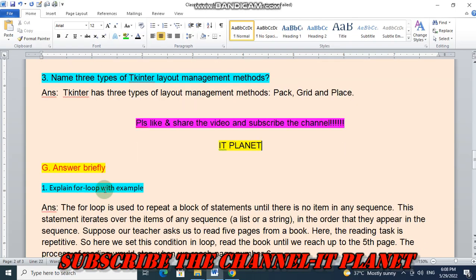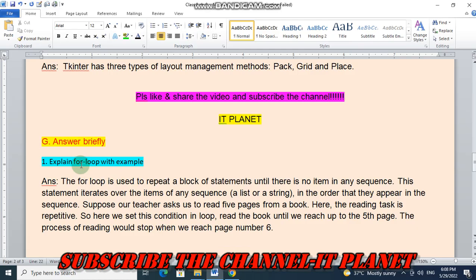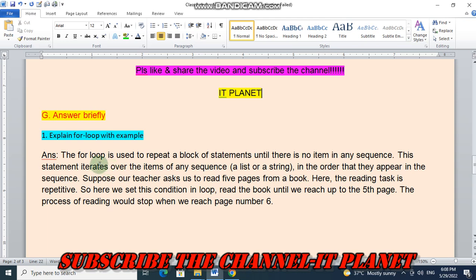Next question, answer briefly. Explain for loop with an example. The for loop is used to repeat a block of statements until there is no item in any statements. This statement iterates over the items of any sequence, a list or a string, in the order that they appear in the sequence. Suppose our teacher asks us to read five pages from a book.